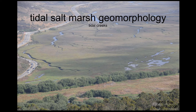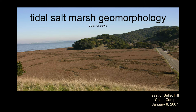Up in China Camp in San Francisco Bay, the vegetation tracks with the creeks — darker colored vegetation in a sea of Salicornia demarcates the articulated branching streams. So tidal salt marshes have a lot of stream articulation, sinuosity, and important geomorphology.